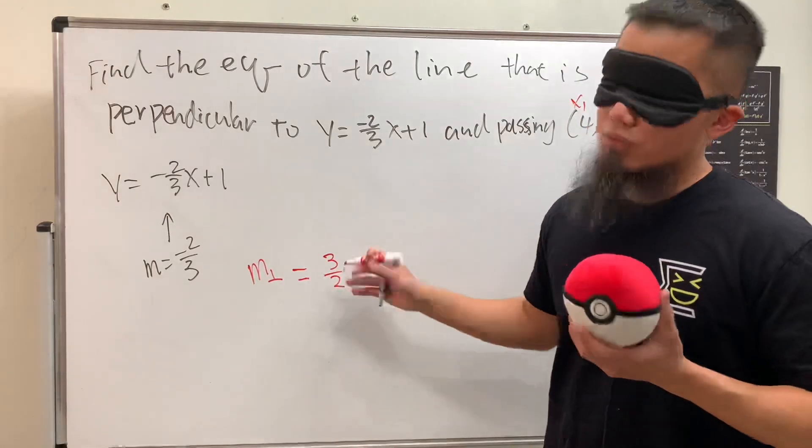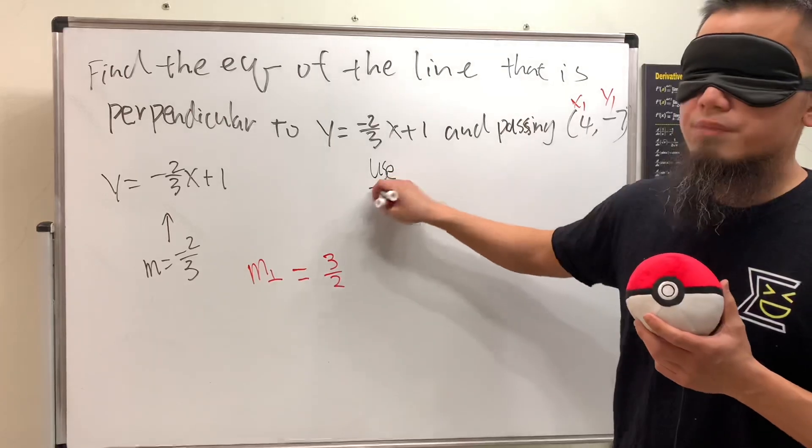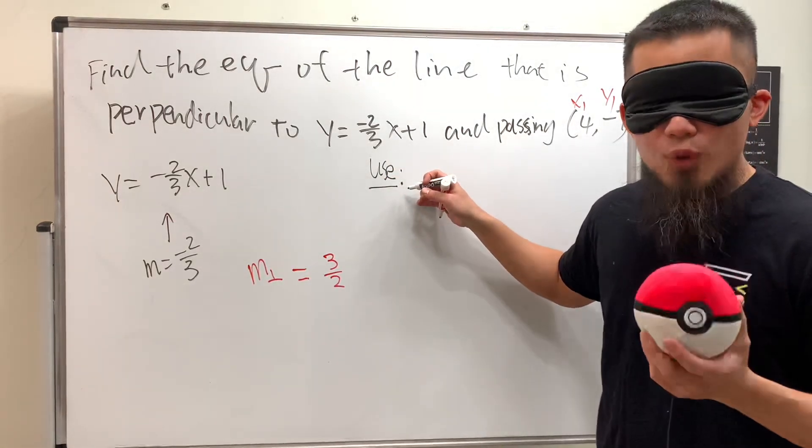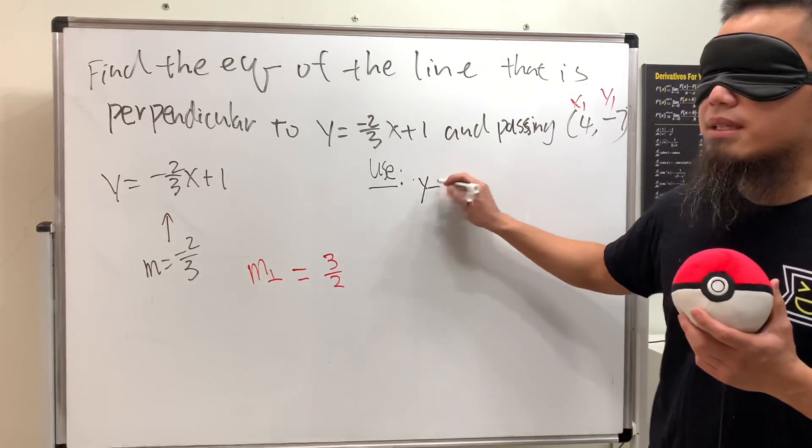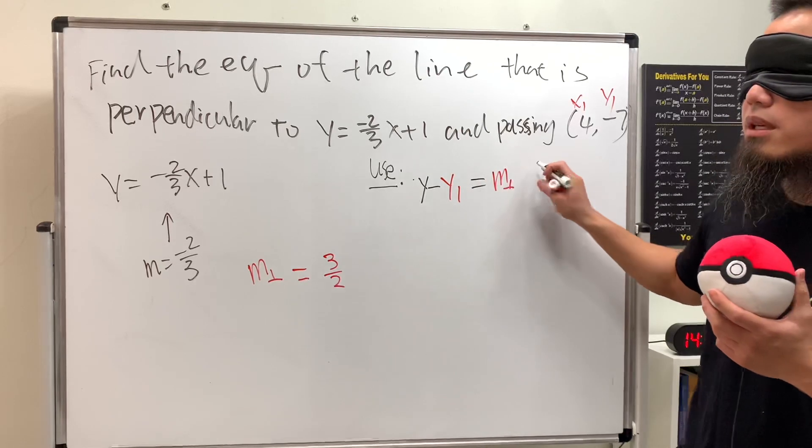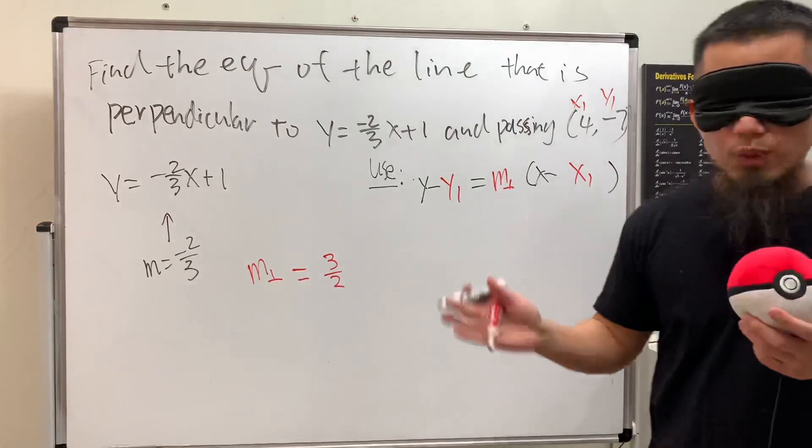Now we're going to use our favorite form, which is the point-slope form: y minus y₁ equals m times x minus x₁. This is the form we're going to use.